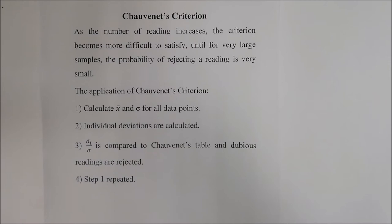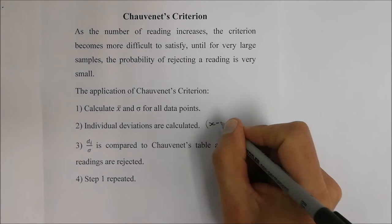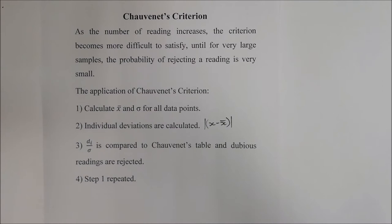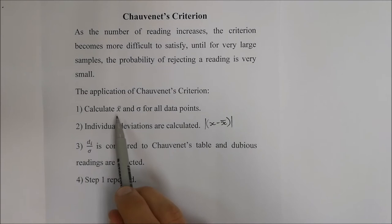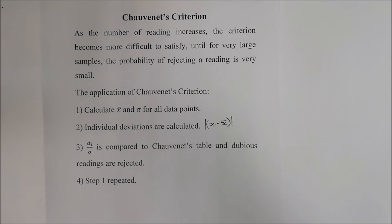First, calculate the mean and standard deviation for all data points. Then look at the individual deviations — each deviation is x minus the mean value, taken as an absolute value. Next, divide each deviation by the standard deviation and compare it to Chauvenet's table; any dubious readings are then rejected. If any values are rejected, that changes the mean and standard deviation, so step one must be repeated using only the remaining data points.